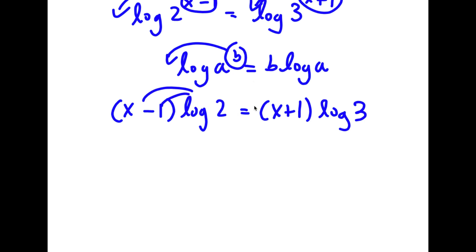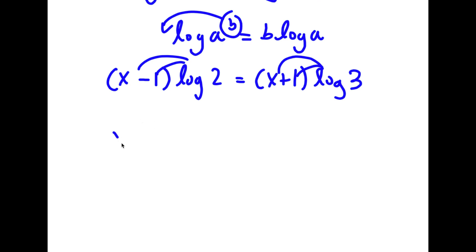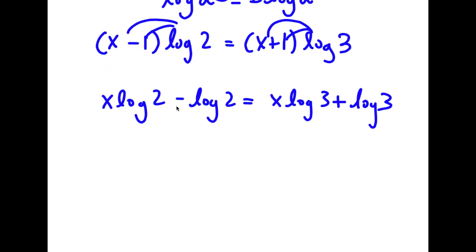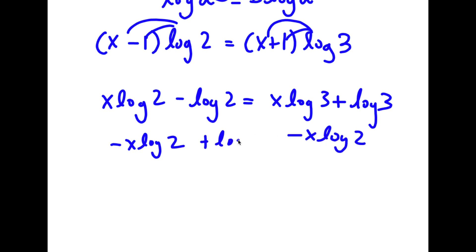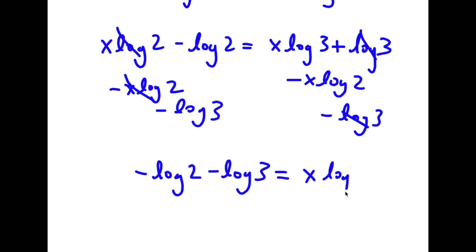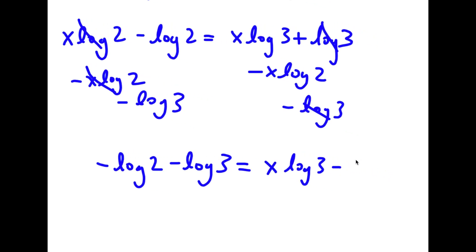Now if I distribute these two, I have x times log 2 minus log 2 is equal to x times log 3 plus log 3. Now I'm going to subtract x times log 2 on both sides and add log 2 on both sides. So then these two cancel out, these two cancel out, and I have negative log 2 minus log 3 is equal to x times log 3 minus x times log 2.